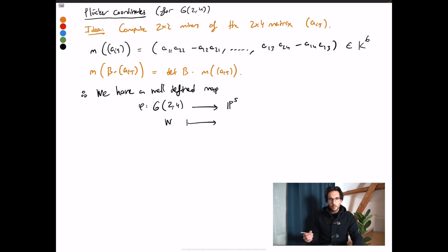And the way this map is defined is that you take a subspace W of V, you choose a basis, you write it as a 2 by 4 matrix, and then compute the 2 by 2 minors.